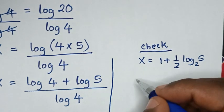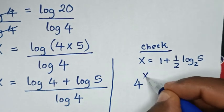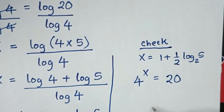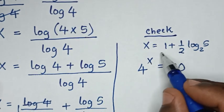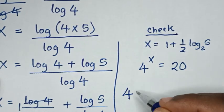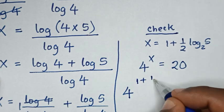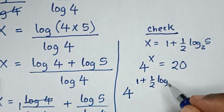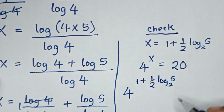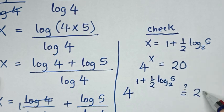Now let's check our answer. From our problem, 4 to the power x is equal to 20. We'll substitute the value of x, which is 1 plus one-half log of 5 base 2, so: is 4 to the power of that equal to 20?